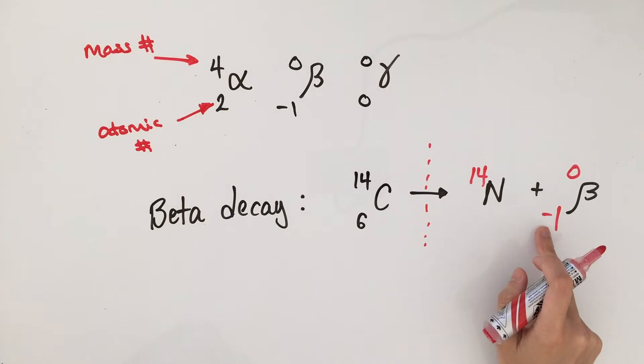Here's the slightly trickier part, because the beta particle has a minus 1 for its atomic number. So all we need to do is just think backwards. Subtracting 1 from what gives us 6? So 7 minus 1 gives us 6. So we know that the atomic number for nitrogen is 7.